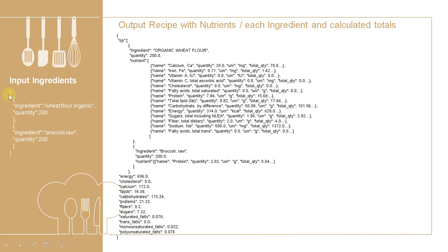We have an example of a JSON input string on the left side with ingredients and quantities in grams that is sent to the API. On the right side we have the JSON response from the API. We see that for each ingredient there is a list of nutrients with its quantities per 100 grams, and also a calculated total as a function of the input quantity of the ingredient. We did not list the nutrients for raw broccoli here because it has 65 nutrients and there is a lack of space. At the end, recipe totals for main nutrients are calculated as well.